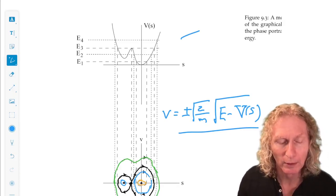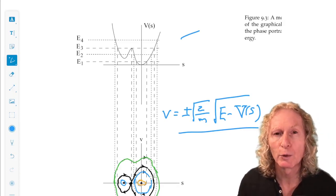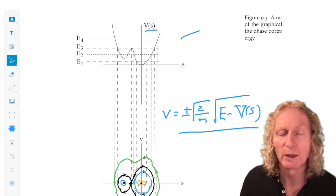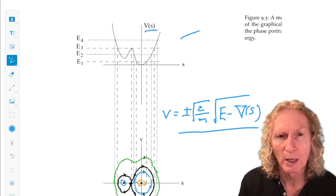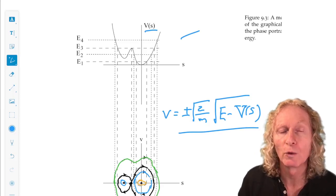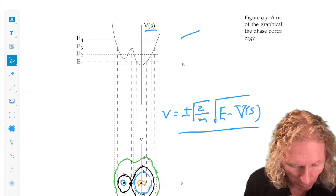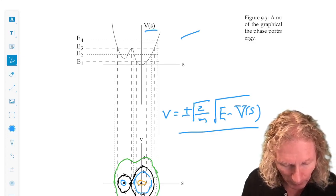Okay, now remember how we did this. We picked values of V of s, we picked values of energy, and we plotted the V of s equals constant, where constant was the chosen values of energy. And here we picked four values, E1, E2, E3, and E4.